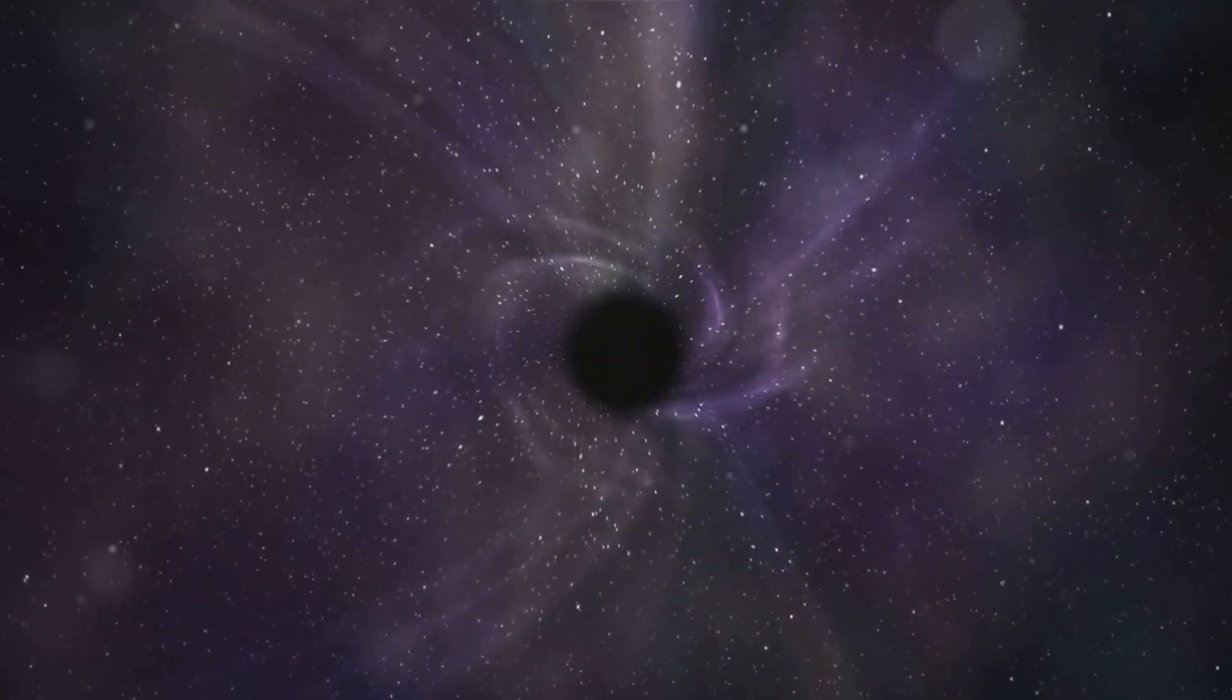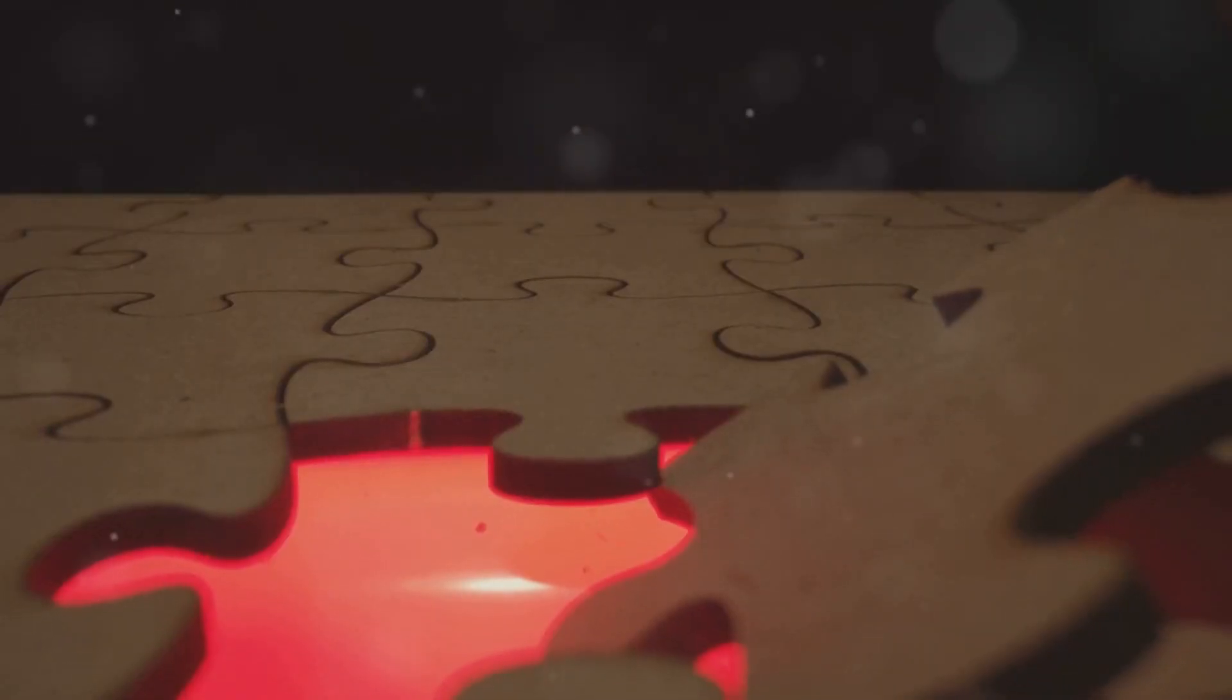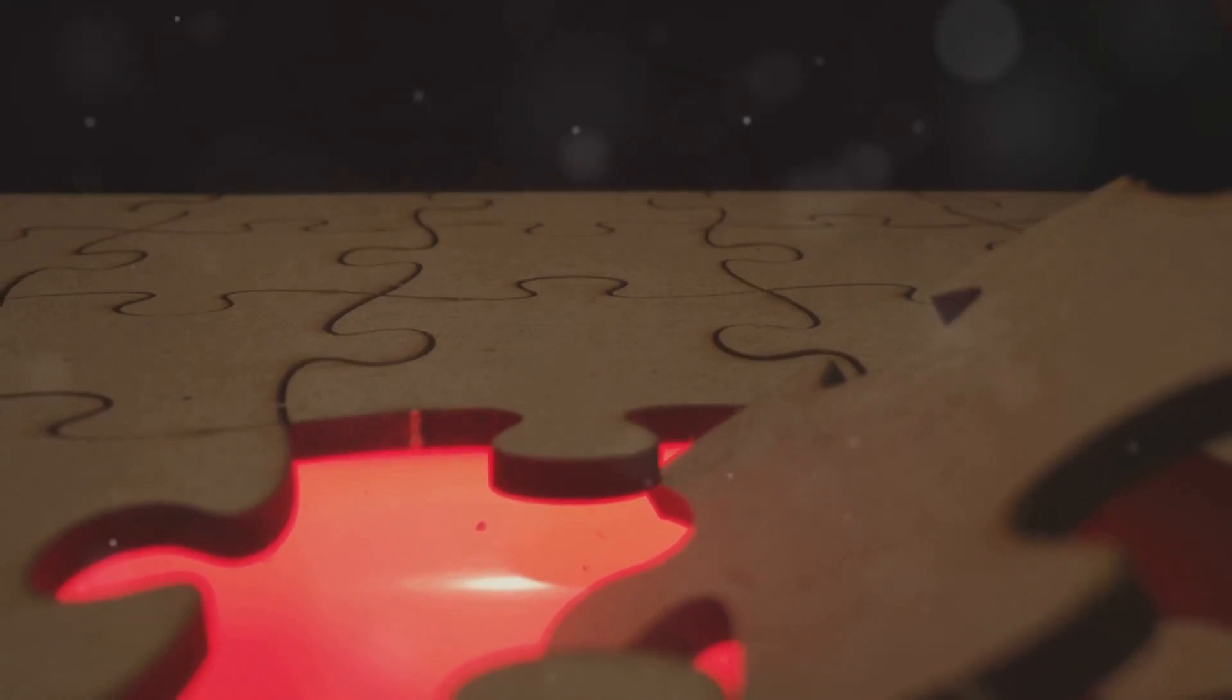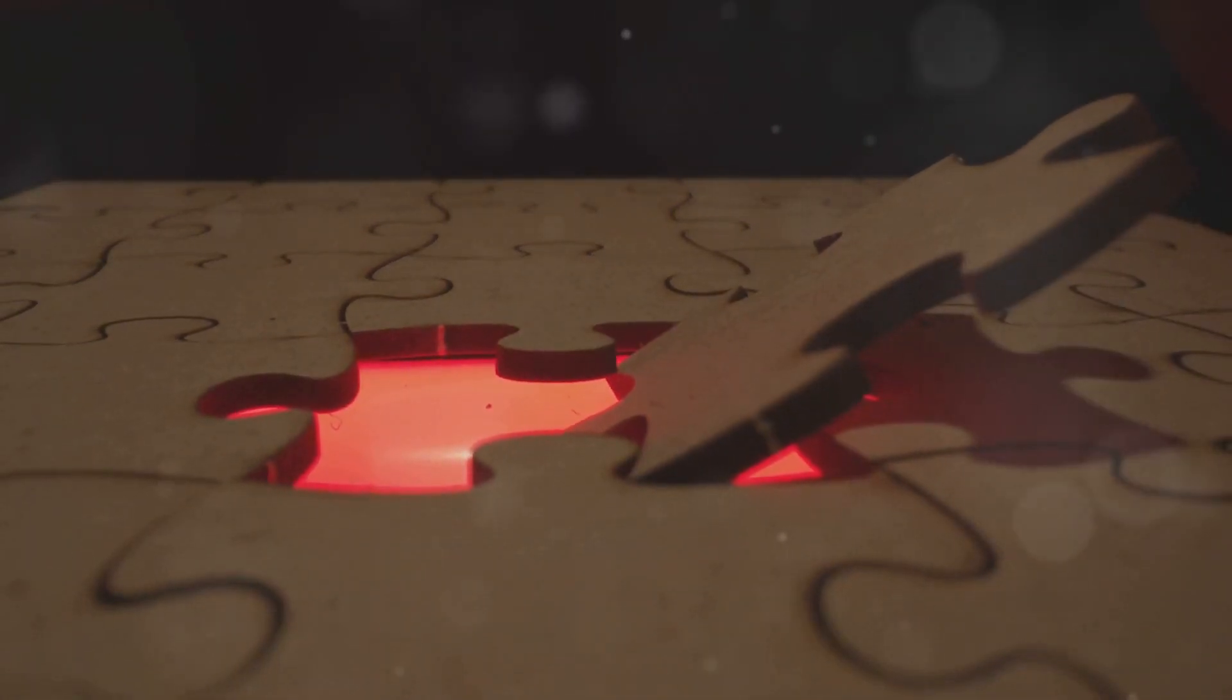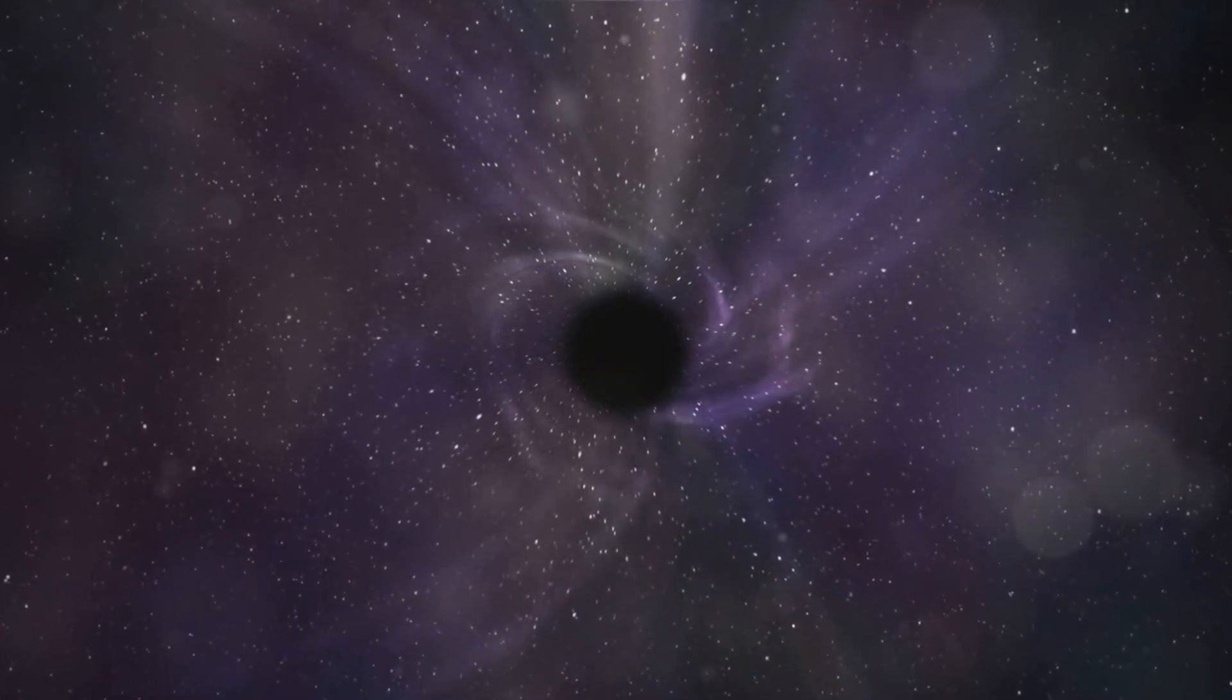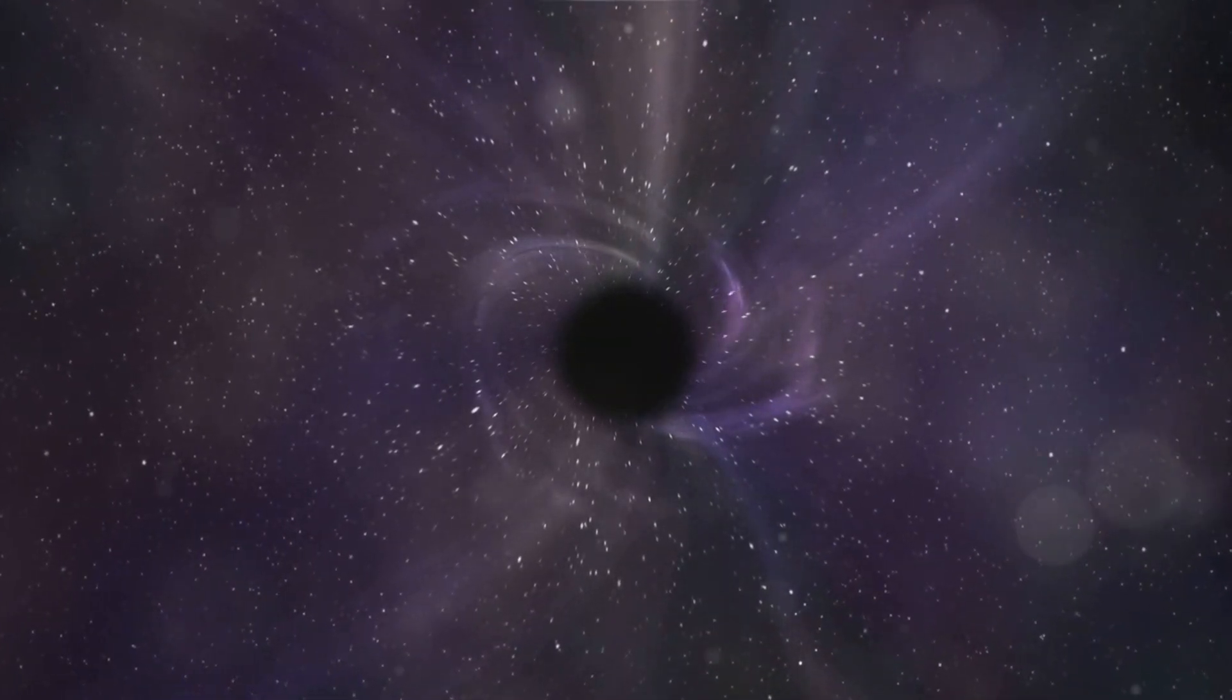But if information can be lost in a black hole, it throws this principle out the window. Imagine having a puzzle where suddenly pieces start disappearing—you could never complete the picture or even understand what it was supposed to show. In physics, losing information means losing our ability to predict the future or understand the past of a physical system.